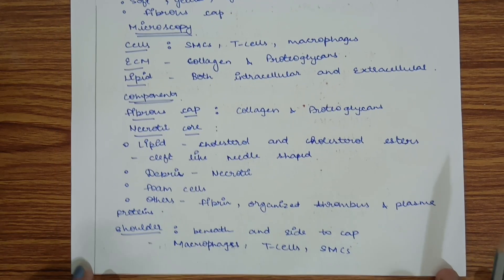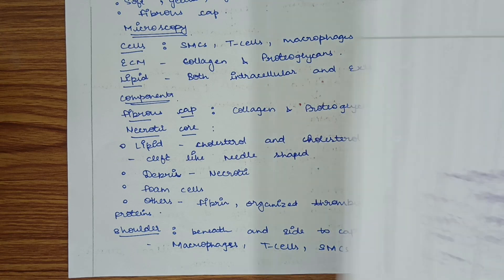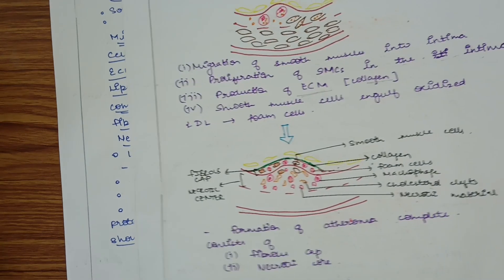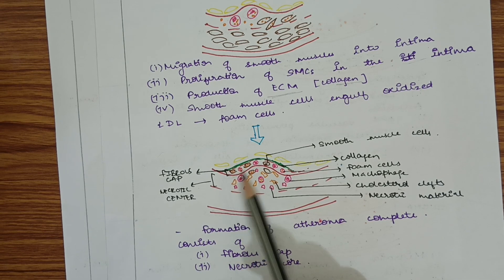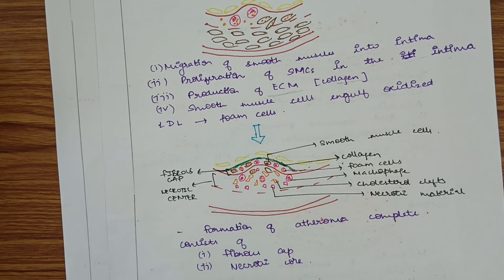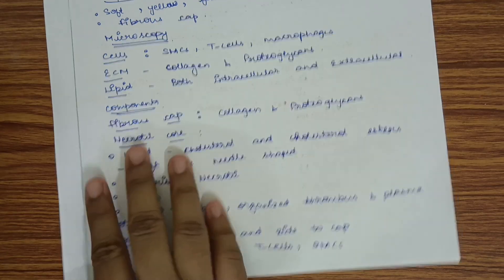Shoulder cells are present beneath and to the side of the fibrous cap. In the shoulder region, cells such as T-cells, smooth muscle cells, and macrophages are most commonly seen. So the three regions in microscopy are the fibrous cap, necrotic core, and shoulder regions.